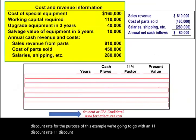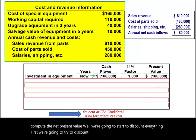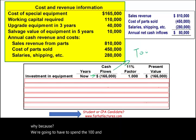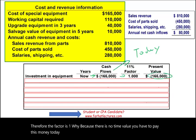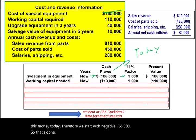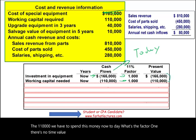Now let's compute the net present value by discounting everything. The $165,000 is paid today, so the factor is 1 — there is no time value — giving us negative $165,000. Similarly, the $110,000 working capital is spent now, so the factor is also 1, giving us another negative $110,000. Those two are done.